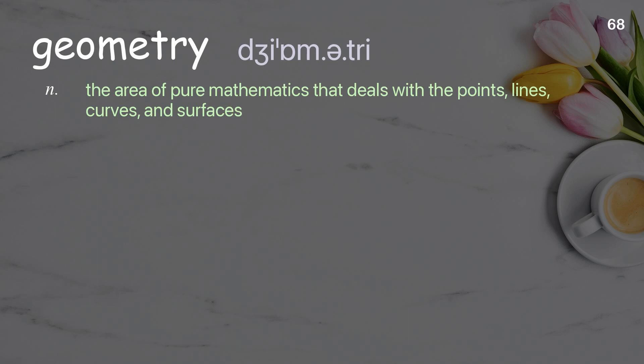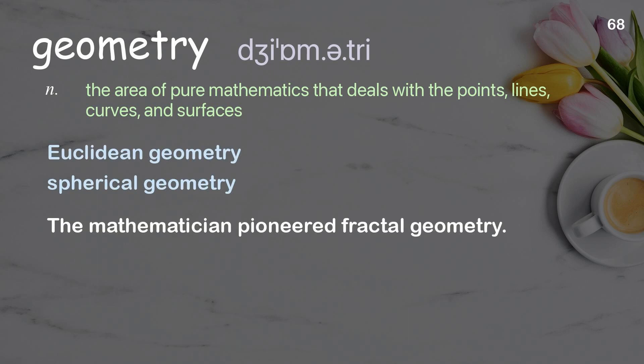Geometry: The area of pure mathematics that deals with the points, lines, curves, and surfaces. Examples: Euclidean geometry, spherical geometry. The mathematician pioneered fractal geometry.